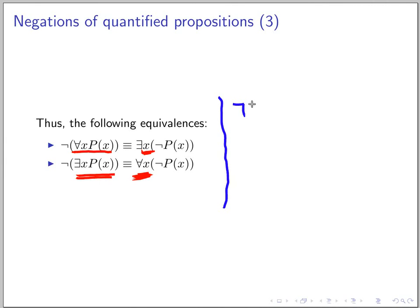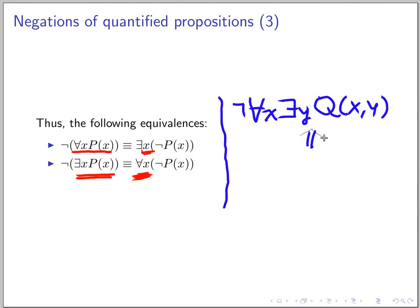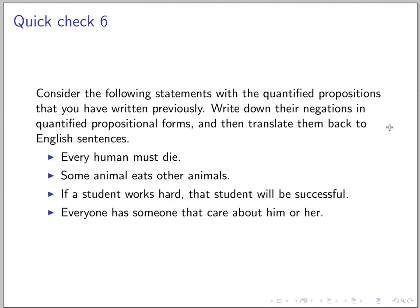Before we move on, think about: what is the negation of a quantified proposition with two variables? We'll practice this in class. For Quick Check 6, take the statements you wrote in quantified propositional form from Quick Check 5, write their negations, and translate them back into English sentences to see if the negation makes sense. This is the end of Lecture 2 — I hope you watch it before class. See you Thursday.